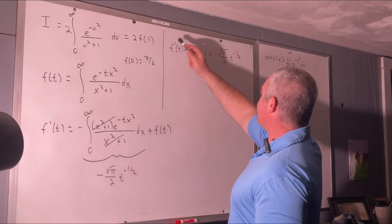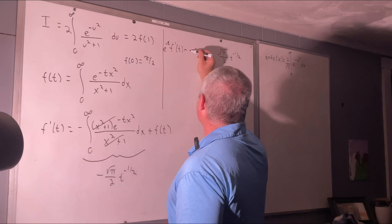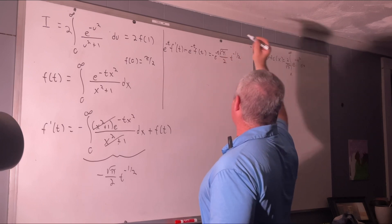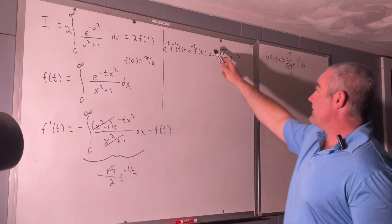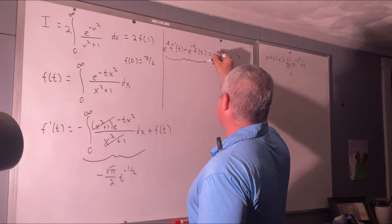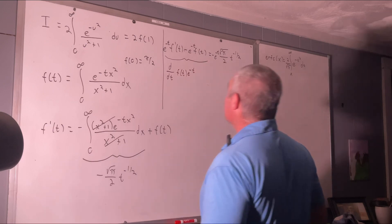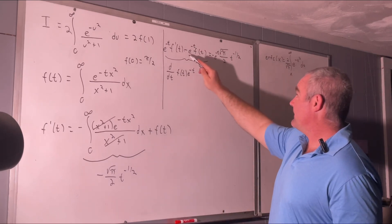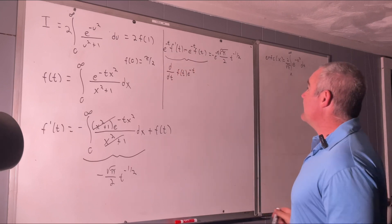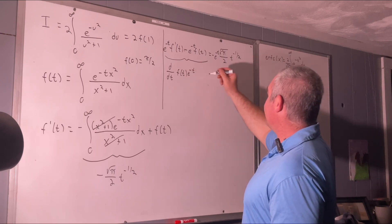What that means is we multiply both sides of this equation by e to the negative t, and then something nice happens. The left side is now the result of a product rule — in fact, this is just the derivative with respect to t of f of t times e to the negative t, because we'll have first times the derivative of the second, plus the second times the derivative of the first.